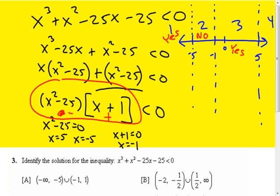And above 5, like 7, 49 minus 25 will be positive. This will also be positive, not greater than zero.